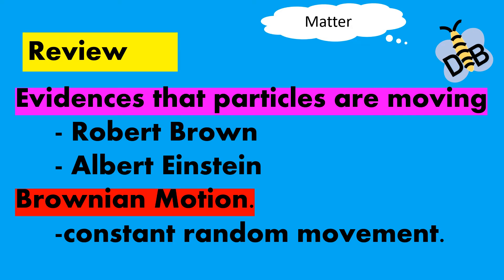Before we start, let's have a review. In our previous lesson, we discussed the evidences that show all particles of matter are moving. These evidences were the experimentation or studies by Robert Brown and Albert Einstein. At first, it was Robert Brown who discovered that pollen particles placed in water are moving in constant random motion, but Robert Brown did not know the cause of the pollen's random motion. Later, Albert Einstein discovered that the cause of the pollen random motion is the collision of the indivisible water particles with pollen. This motion was named after Robert Brown because he was the first one to discover the motion, and it is known as Brownian motion today.